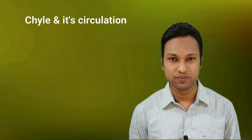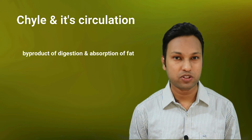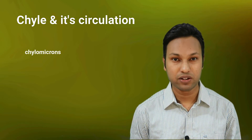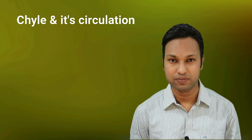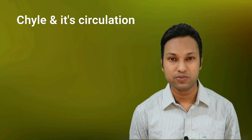First, let's understand what chyle is and how it is circulated through the body. Chyle is the by-product of digestion and absorption of fat. Most of the absorbed fats combine with lipoprotein, cholesterol, and phospholipid to form chylomicrons. These chylomicrons enter the lacteals as a milky fluid, which is known as chyle.